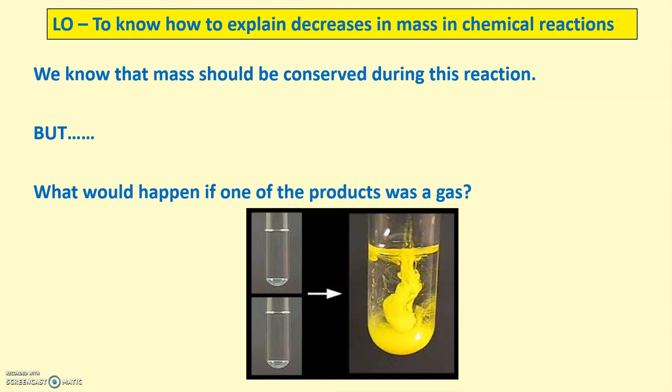We do know already that the mass should be conserved during this reaction indicated just here. We've got two liquids forming a solid and another liquid in an enclosed test tube. But what would happen if one of the products was a gas and it was allowed to escape? Well, the mass would decrease but it would still be conserved because it is not just being created or destroyed. It is just disappearing from the test tube and so cannot be measured.